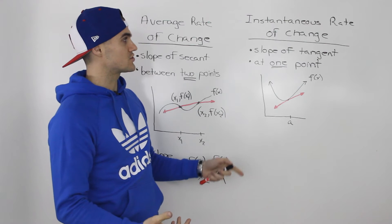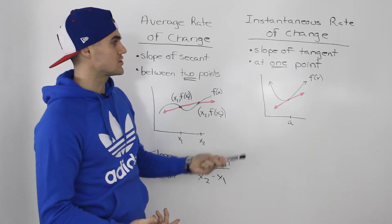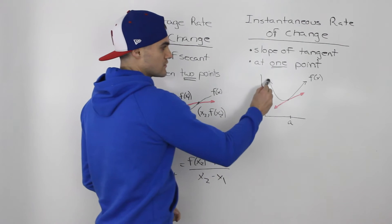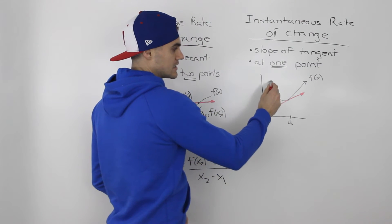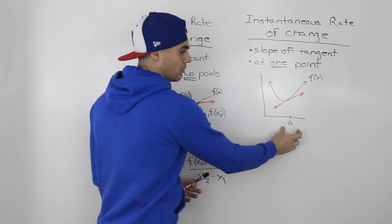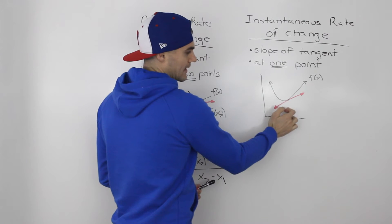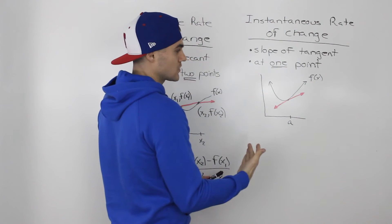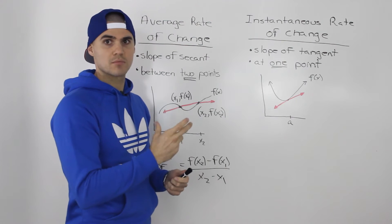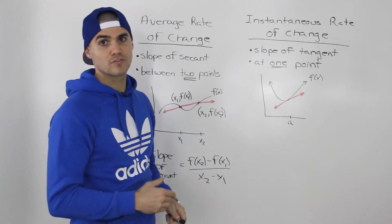The other thing they're going to ask a lot in this section is the instantaneous rate of change — actually more than the average rate of change. The instantaneous rate of change is basically the slope of the tangent of a function at one point. For example, if you have a function representing the distance of a car traveling and you want to find the speed at a certain point in time, say at time a, you find the slope of the tangent at that point.